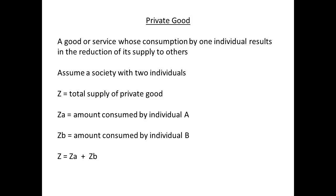If the supply of goods is Z, and ZA represents the amount consumed by individual A, and ZB the amount consumed by individual B, then Z equals ZA plus ZB. Whilst the marginal cost of the public good was zero, the marginal cost of a private good will have a positive value.